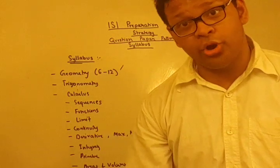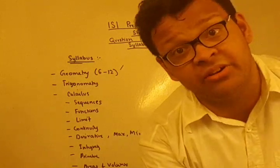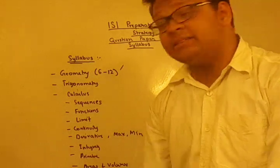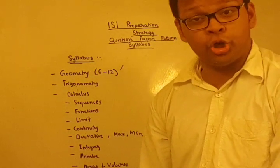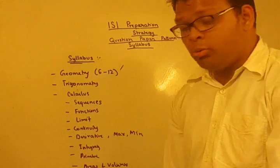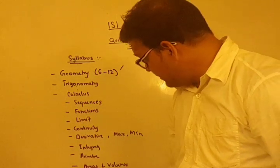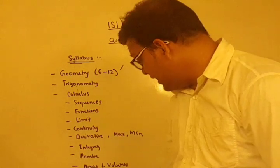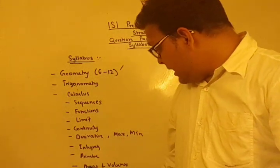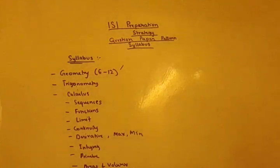Trigonometry is very important — you must know the basic sine and cosine relations, solutions of trigonometric equations (general and particular solutions), and trigonometric graphs, which are the most important for solving trigonometric problems. Calculus is another hot topic: you need to know sequences, functions, limit definitions, continuity definitions, derivatives including maxima and minima, definite and indefinite integration (primitives), and areas and volumes using integration. Please copy this down.